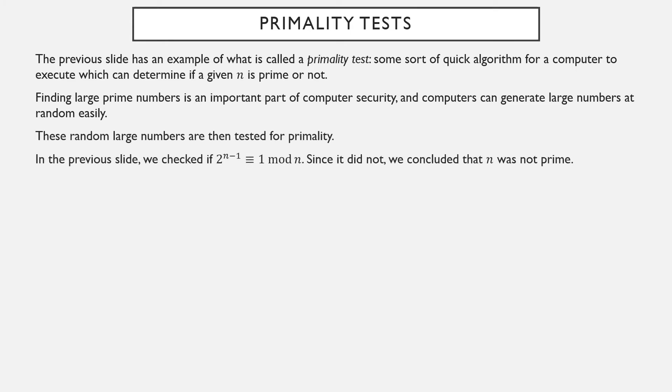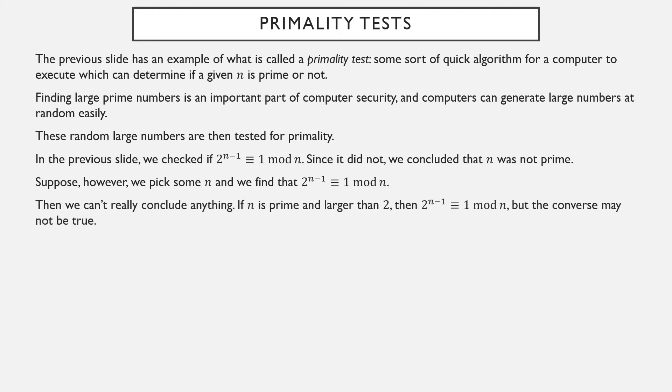In the previous slide, we checked if 2 to the n minus 1 is equivalent to 1 mod n. If it's not, n is not prime. Suppose however, 2 to the n minus 1 was equivalent to 1 mod n. That doesn't actually tell you n is prime. If n is prime, then this must be true. But it doesn't work in the converse. If this is true, it doesn't necessarily mean n is prime. However, if this is not true, then n is not prime.